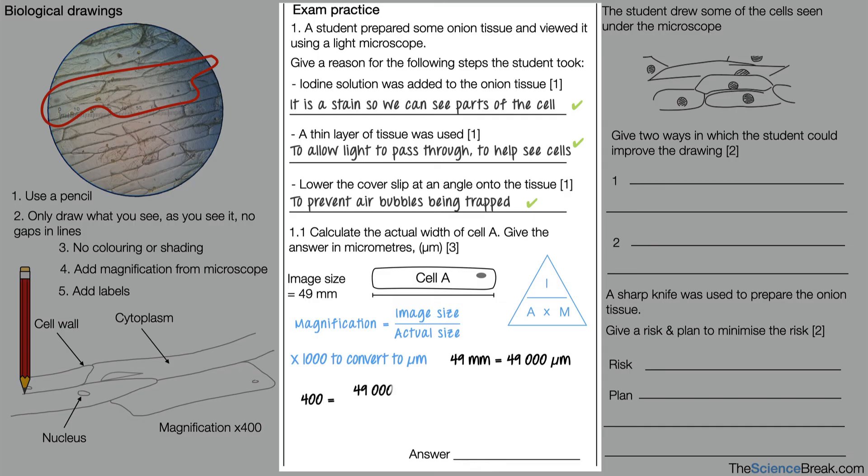We would then substitute into our equation and rearrange. Or we would rearrange first and then substitute into our equation. Either one of those will get you the mark. 49,000 divided by 400 will give us the actual size. And that is 122.5 micrometers. So one mark for the conversion, one mark for substitution, and the final mark for the answer.